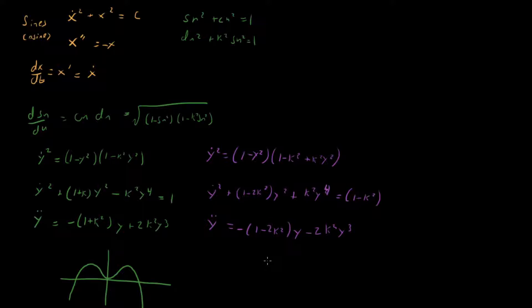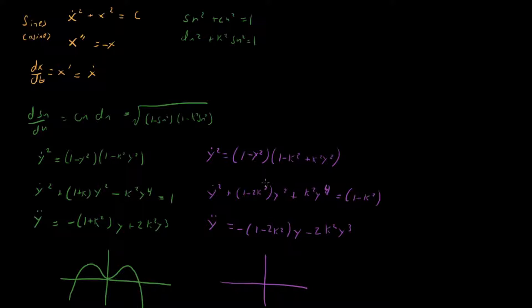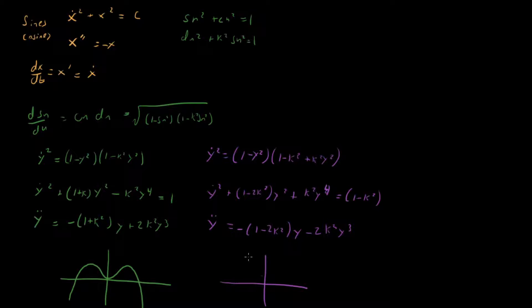Let's look at the potential for cn and get some intuition. We have a positive quartic term, so it goes up at plus and minus infinity. The quadratic term coefficient is (1 − 2k²), and since k goes between 0 and 1, at k=0 this is +y² and at k=1 this is −2y². So the y² term can be positive or negative.